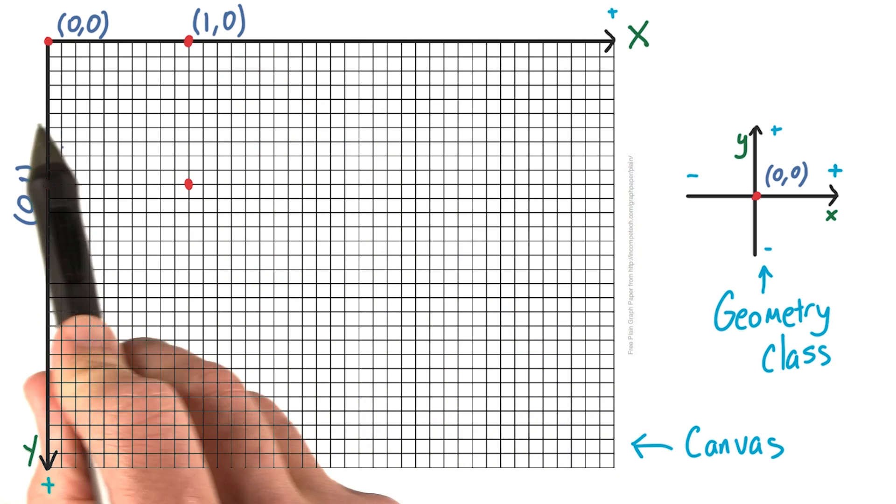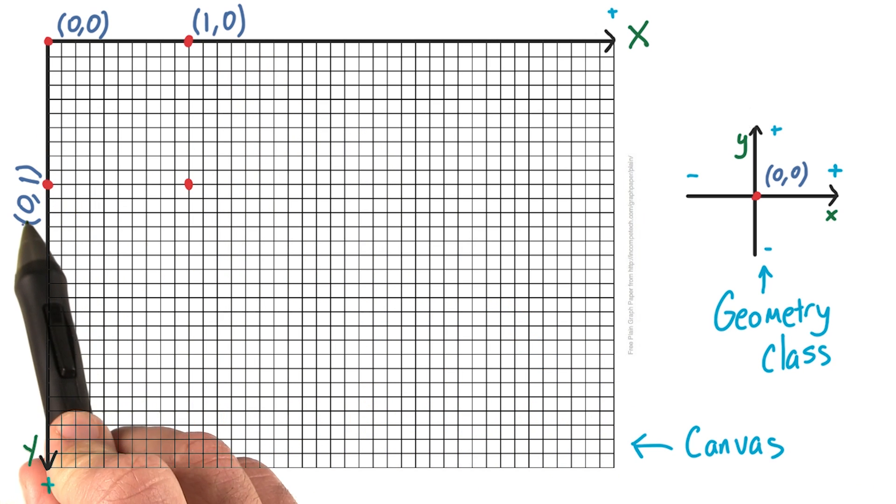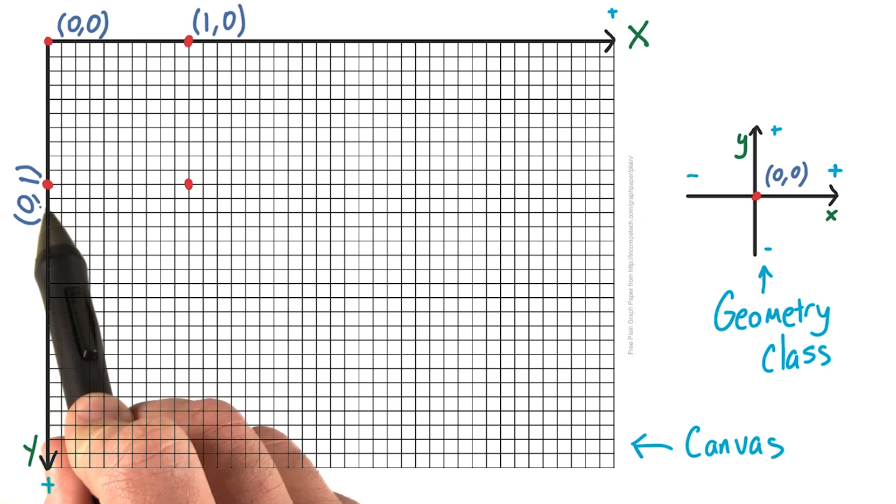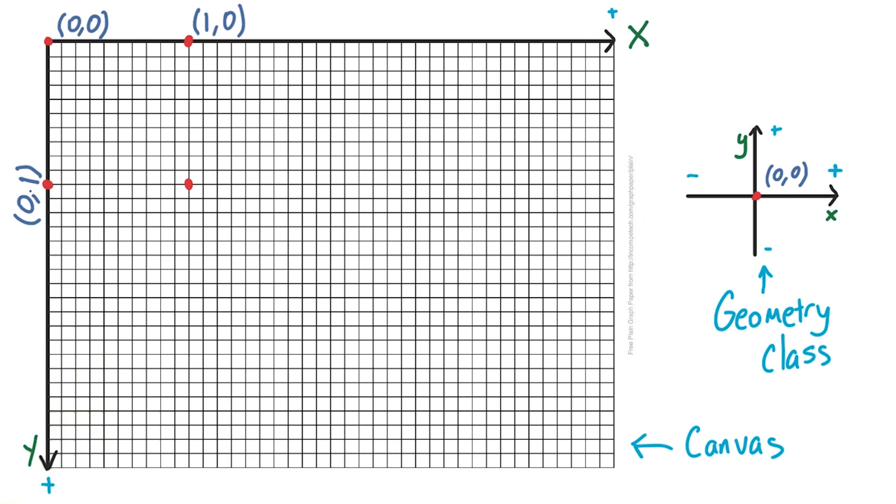Looking at this one, we haven't gone anywhere on the x-axis, so x is still 0. But we've gone down 10 lines, or one line in this example, so the y is 1.